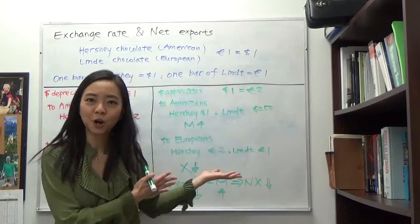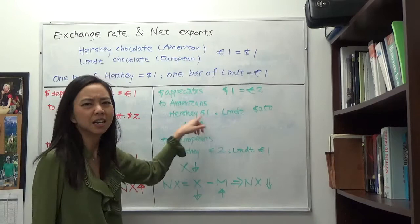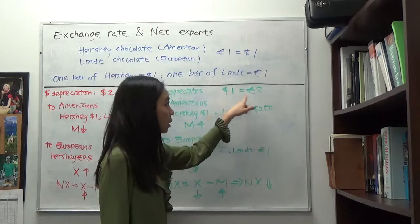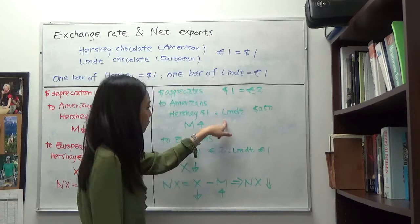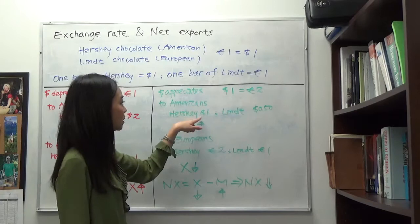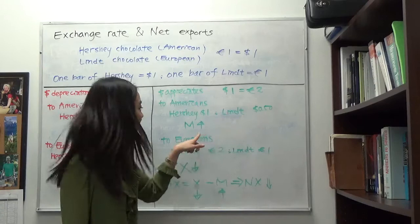To Americans, Hershey still costs one dollar — that didn't change. But how about Lindt? Lindt costs one euro, and now for one dollar we can get two euros. Therefore one euro for us is only 50 cents, and so Lindt costs Americans only 50 cents. Lindt is relatively more attractive than Hershey for Americans, so we're going to buy more Lindt, and that is going to increase our imports.